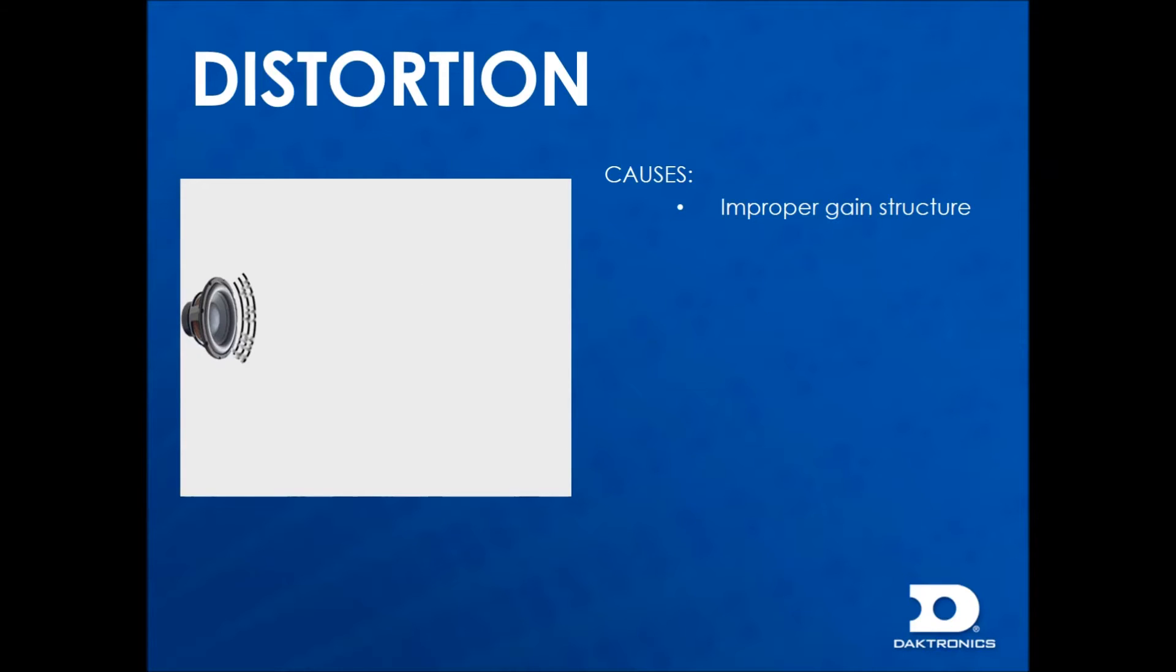The main causes for distortion are improper gain structure, a high level signal being amplified, and bad content such as a distorted recording. The only ways to fix distortion are to use proper gain structure so as not to overdrive the equipment and use quality content.